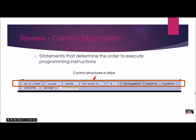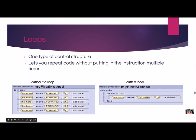Let's do a quick review. A control structure is a statement that determines the order to execute programming instructions. ALICE has many different control structures that you can use. We learned earlier in this chapter about loops. A loop is one type of control structure and it lets you repeat code without putting in the instruction multiple times.